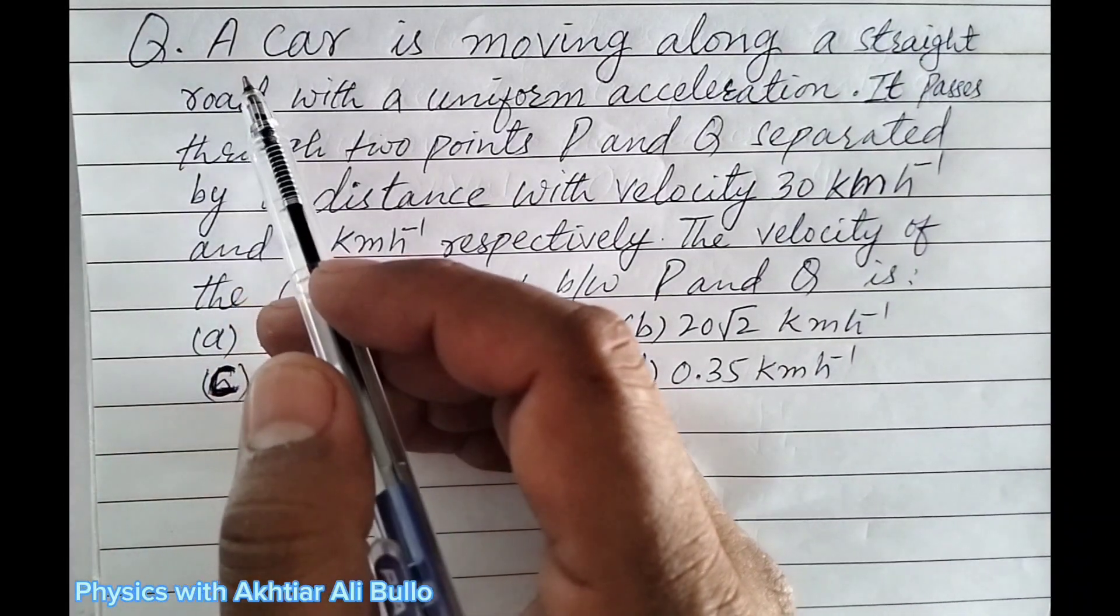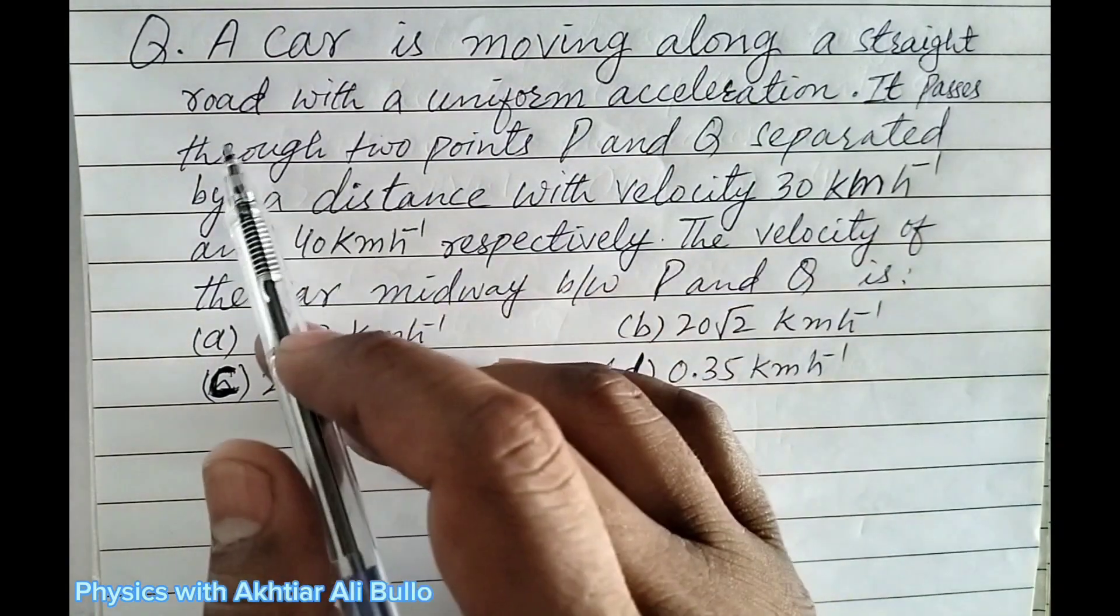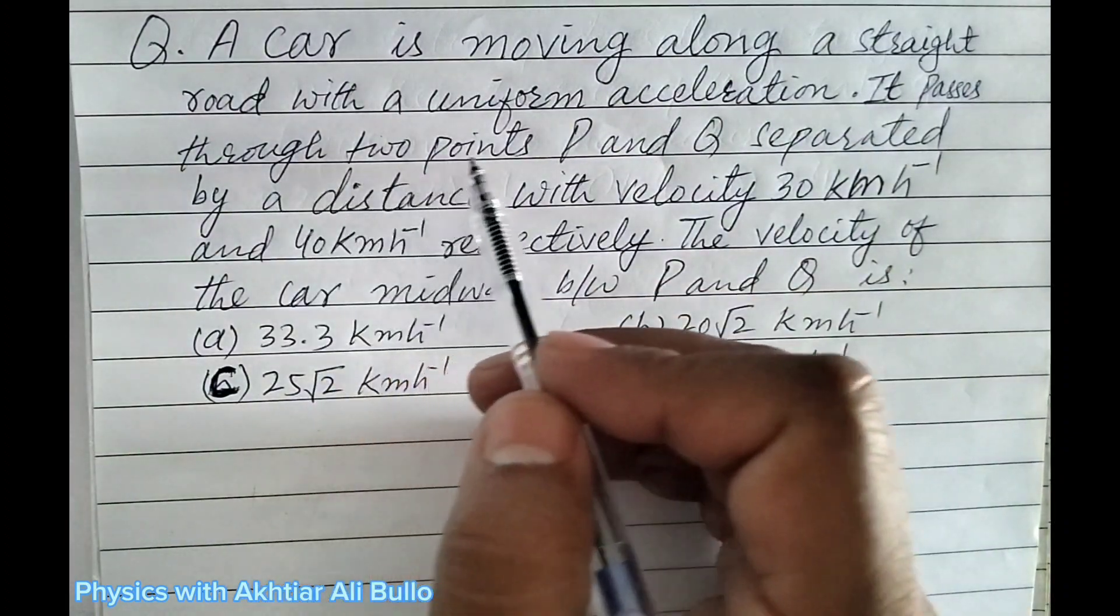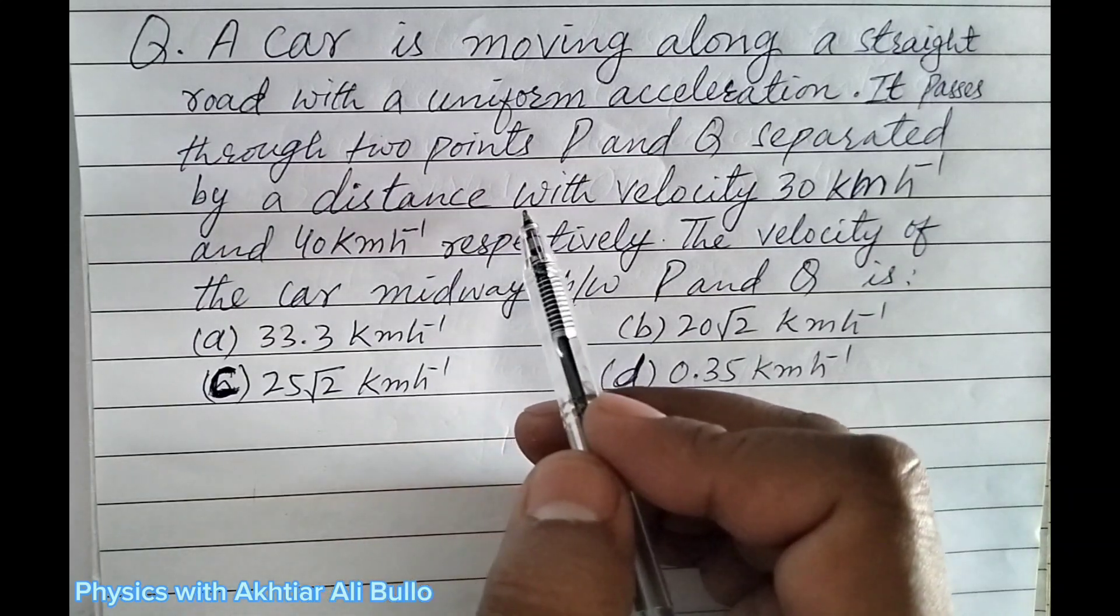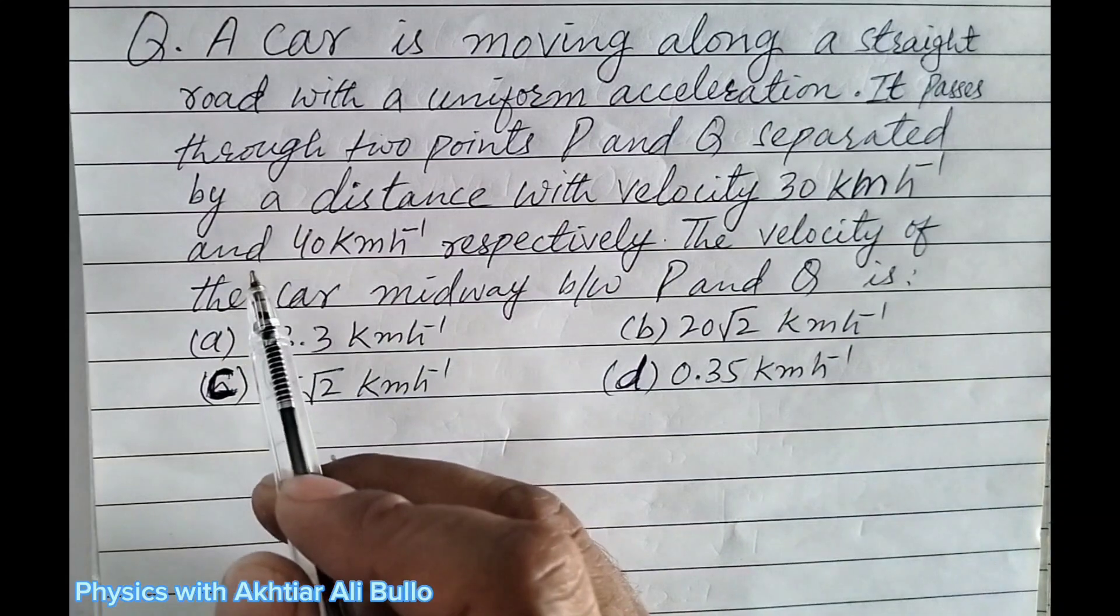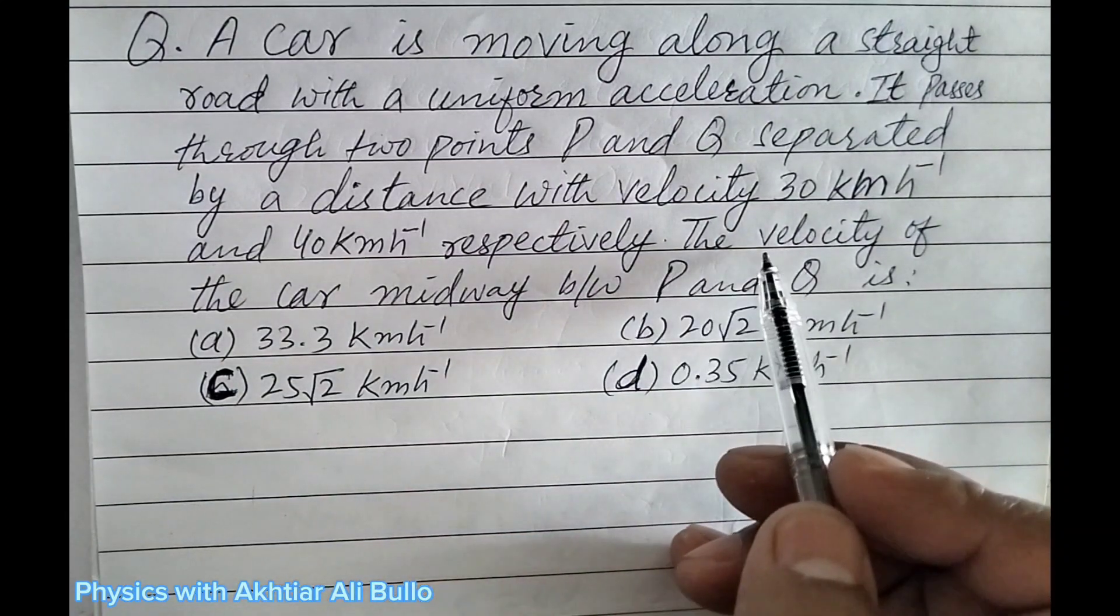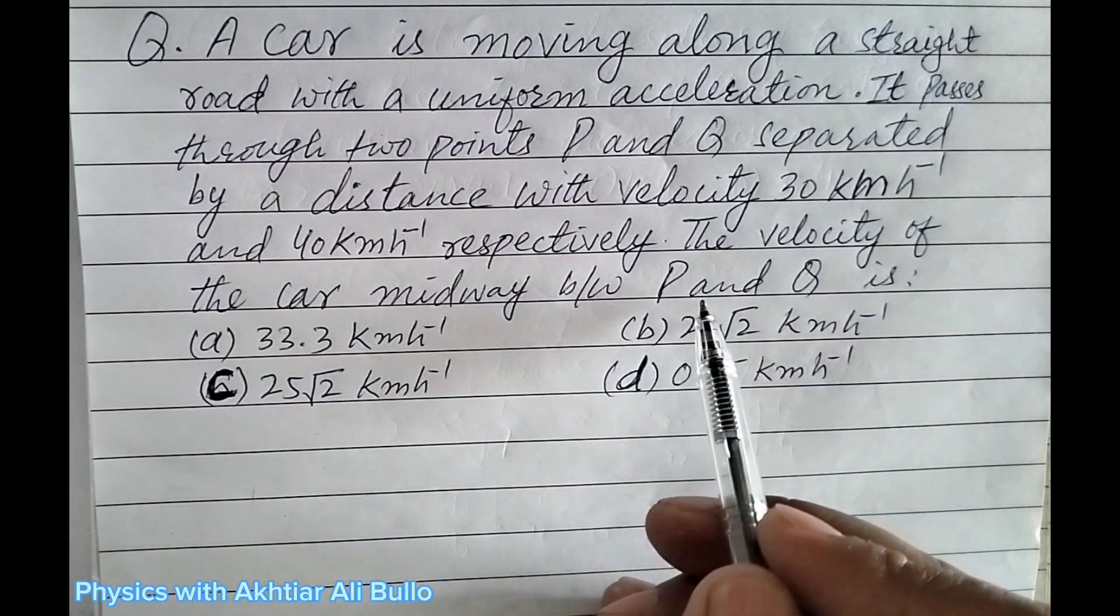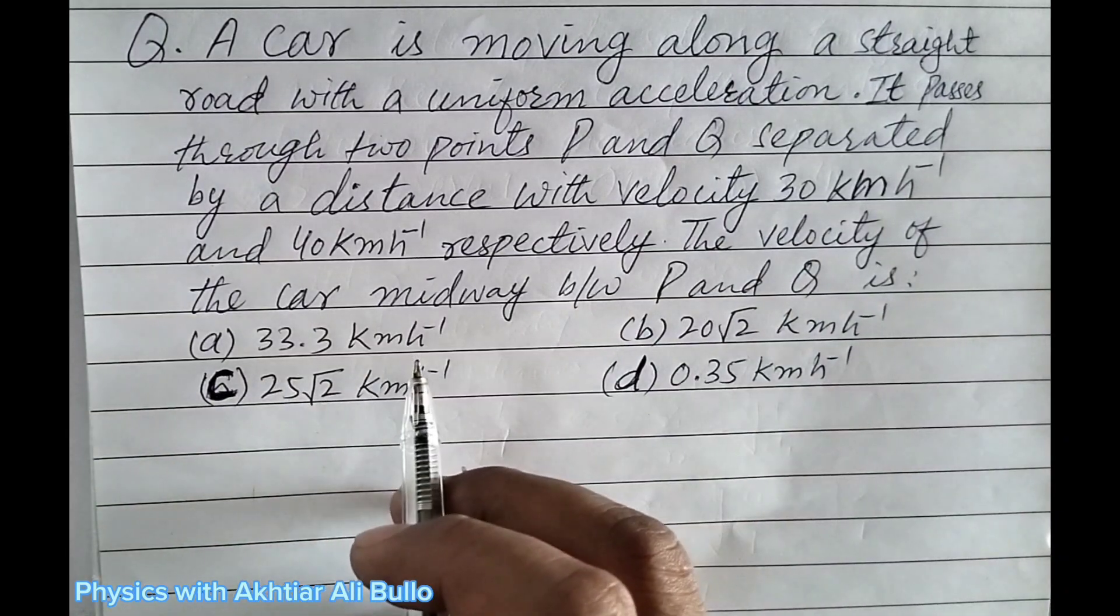The question is: a car is moving along a straight road with a uniform acceleration. It passes through two points P and Q separated by a distance with velocity 30 km per hour and 40 km per hour respectively. The velocity of the car midway between P and Q is (a) 33.3 km per hour,